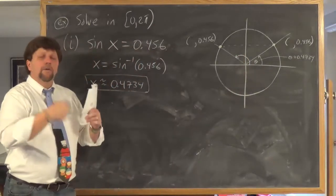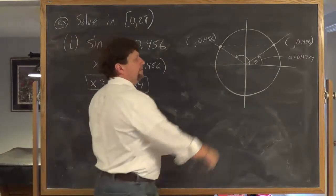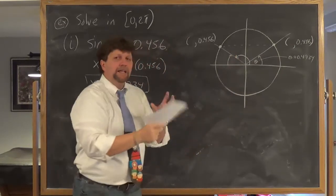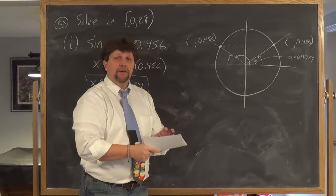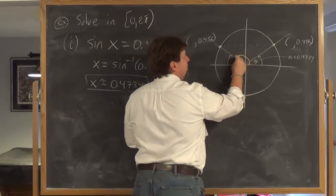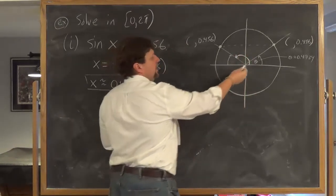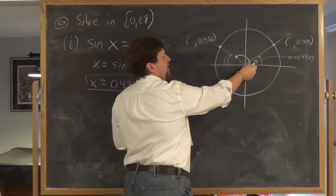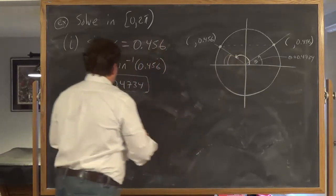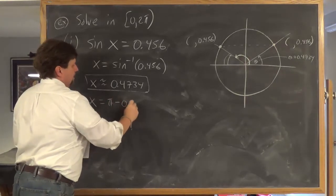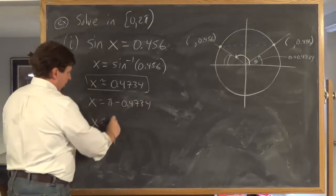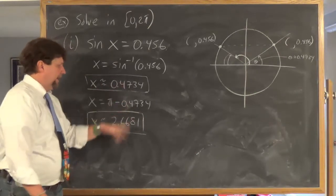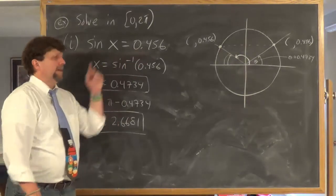We still need the quadrant two angle. By the symmetry of the unit circle, if the reference angle is 0.4734, then the quadrant two angle is π minus 0.4734. Using a calculator: π - 0.4734 ≈ 2.6681. So the two solutions are approximately x ≈ 0.4734 and x ≈ 2.6681.